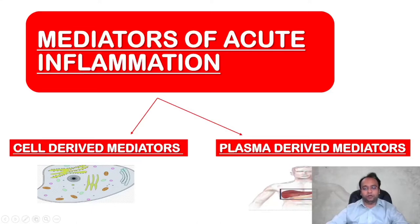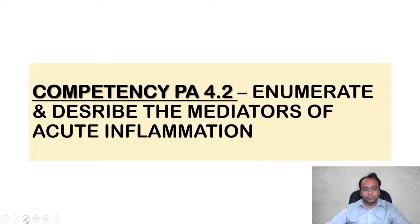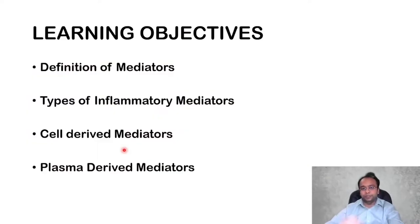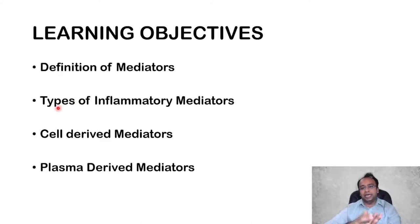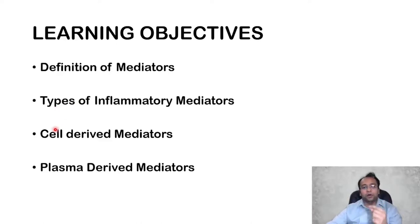Hello everyone, myself Dr. Parth Goswami, and let's discuss the mediators of acute inflammation. It could be cell-derived or plasma-derived mediators. This topic comes under competency number PA 4.2, which includes narrating and describing the mediators of acute inflammation. Our learning objectives are: first, understand the definition of mediators; then discuss the types of inflammatory mediators; and then study individual cell-derived and plasma-derived mediators in detail.